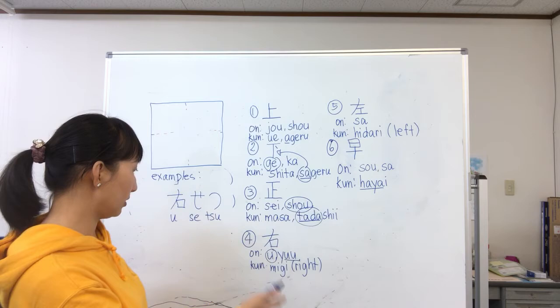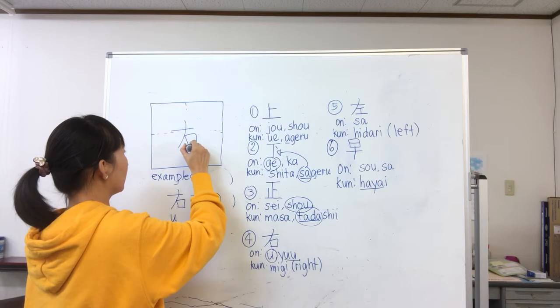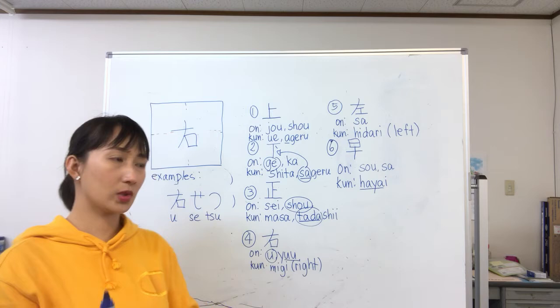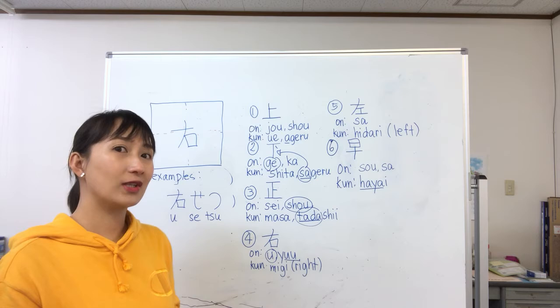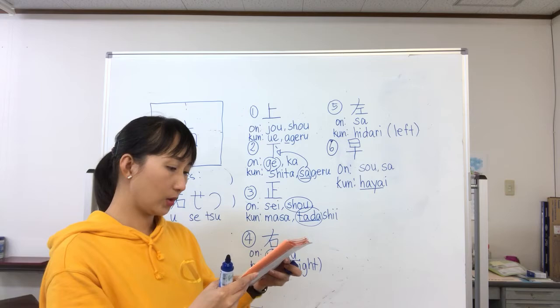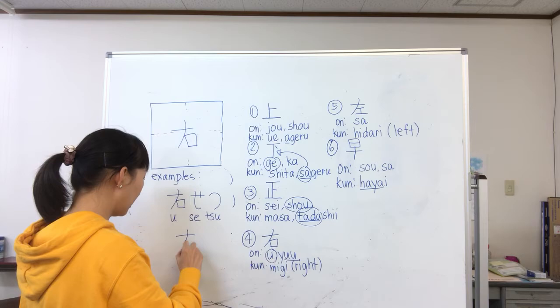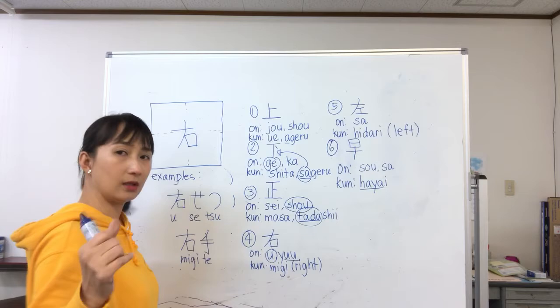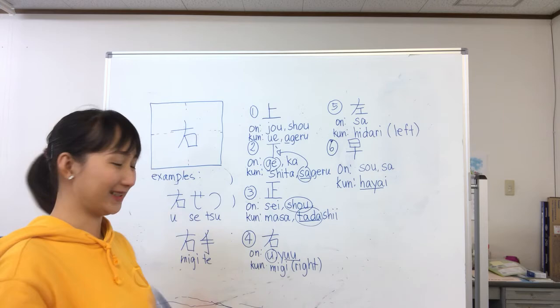This is how you write migi — one, two, three, and then kuchi. So this is migi. For usetsu in a sentence: if someone is driving and you want them to turn right, say usetsu shite kudasai — please turn right. The other example is migite, which means right hand.